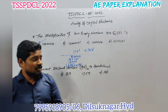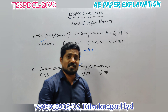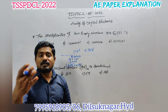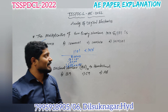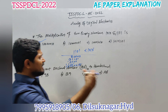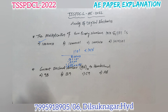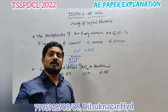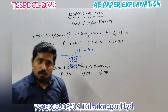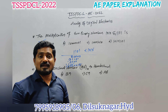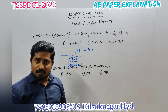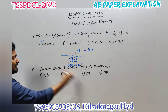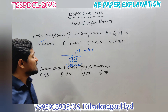For sub-engineering students, better to prepare number systems, Boolean algebra, basic gates, combinational logic circuits, sequential logic circuits, and also memories and converters — analog to digital and digital to analog converters. In the AE TSSPDCL paper we got two questions from basics only, from binary number systems.